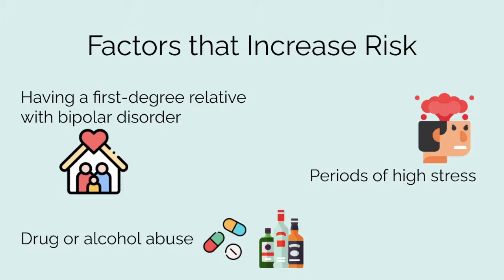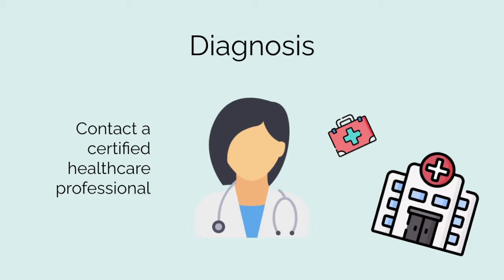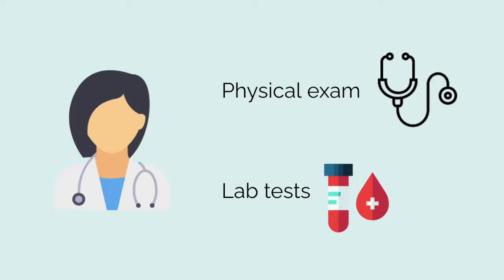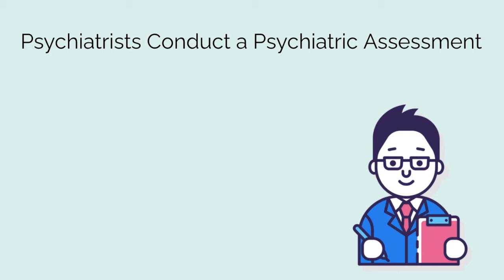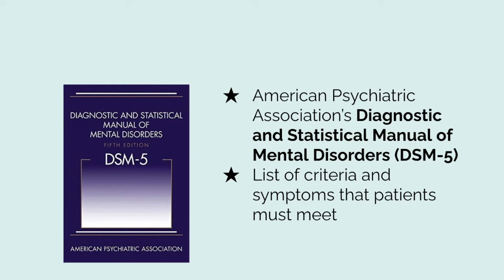If you suspect you may meet the criteria for bipolar disorder, it is important to contact a certified healthcare professional such as your family doctor. Bipolar disorder is usually diagnosed during late adolescence or early adulthood, but can appear at other ages. A physician may conduct a physical exam and lab tests, and may also refer you to a psychiatrist who will conduct a psychiatric assessment — including a self-reported questionnaire or a guided discussion about your thoughts, feelings, and behaviors. The psychiatrist will assess whether you meet the criteria as depicted in the DSM-5, the American Psychiatric Association's Diagnostic and Statistical Manual of Mental Disorders, which lists the criteria and symptoms patients must meet before being diagnosed with bipolar disorder or any other mental disorder.